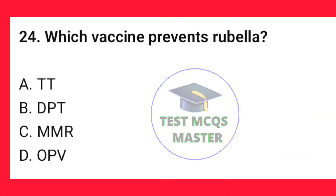Question number 24. Which vaccine prevents rubella? The correct option is C — MMR.